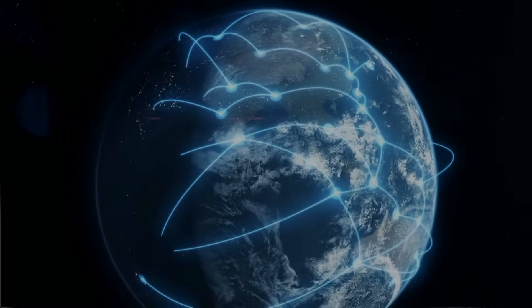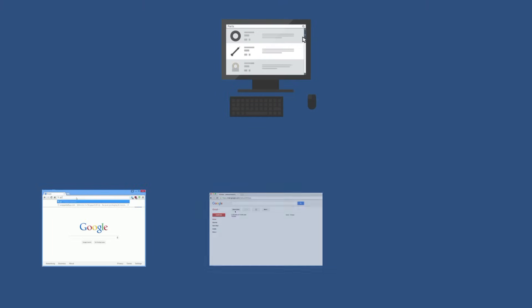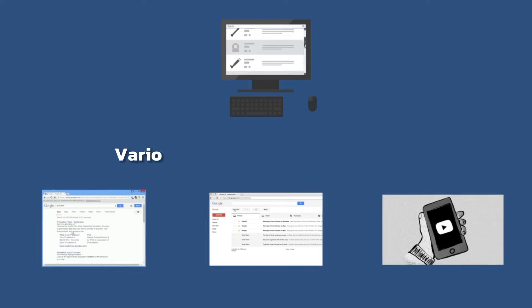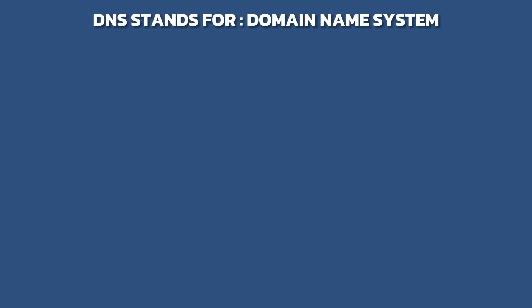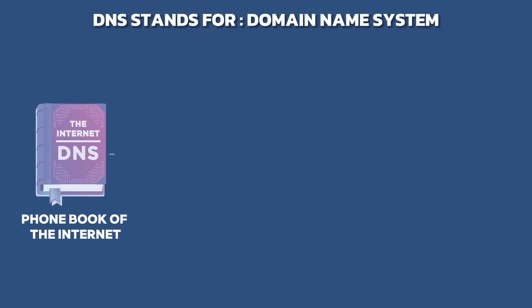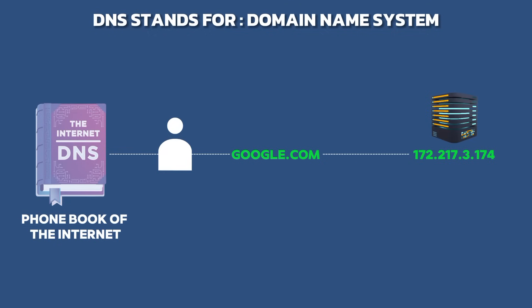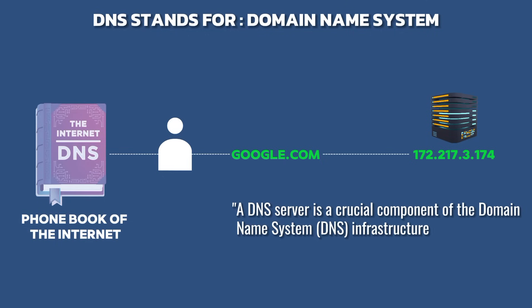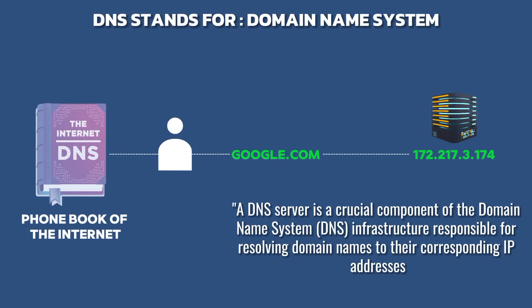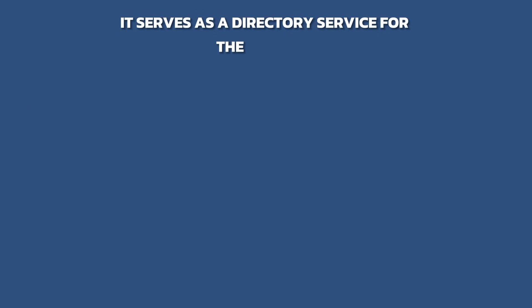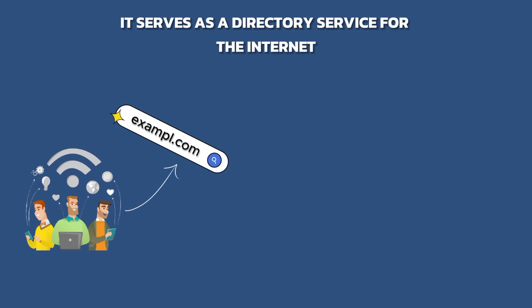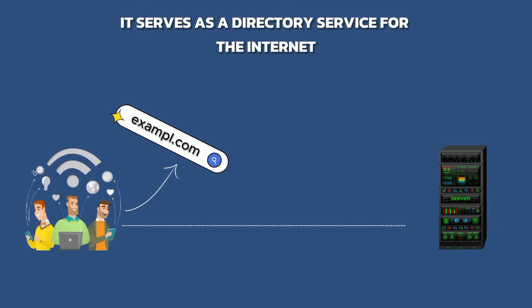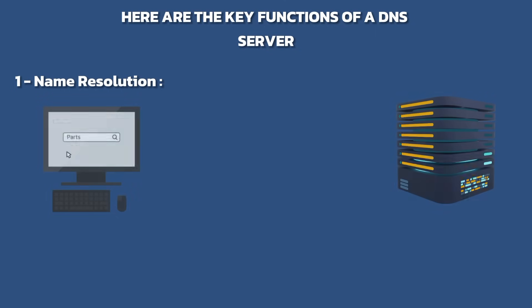Overall, DNS plays a crucial role in facilitating seamless navigation and communication across the internet, enabling users to access websites, send emails, stream videos, and engage in various online activities with ease. A DNS server is a crucial component of the DNS infrastructure responsible for resolving domain names to their corresponding IP addresses — essentially a directory service for the internet, translating human-readable domain names like example.com into machine-readable IP addresses like 192.0.2.1.